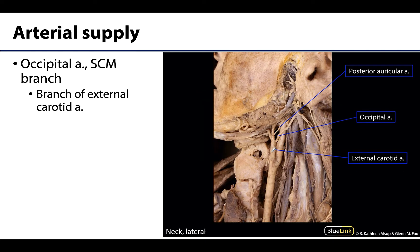What provides oxygenated blood to this muscle? What is the arterial supply to the SCM? It gets supply from numerous small branches throughout the course of the muscle, but its dominant supply is the sternocleidomastoid branch of the occipital artery. The occipital artery is a branch of the external carotid artery, so you have to have that blood supply to have a fully functioning muscle.